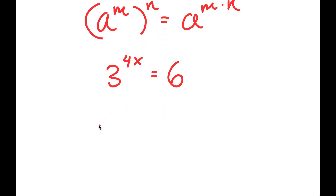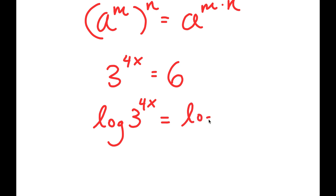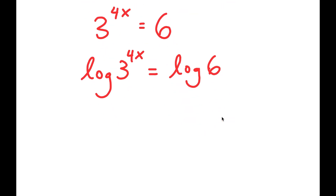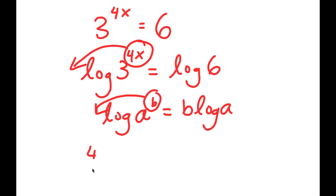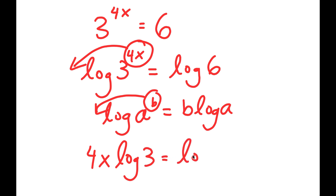Now I'm going to take the log on both sides. So I get log of 3 to the power of 4x is equal to log 6. And if I have something in the form log a to the power of b, I can move the exponent b to the front, so I get b times log a. In this case, I have log 3 to the power of 4x, and I can move 4x to the front, so I get 4x times log 3 is equal to log 6.